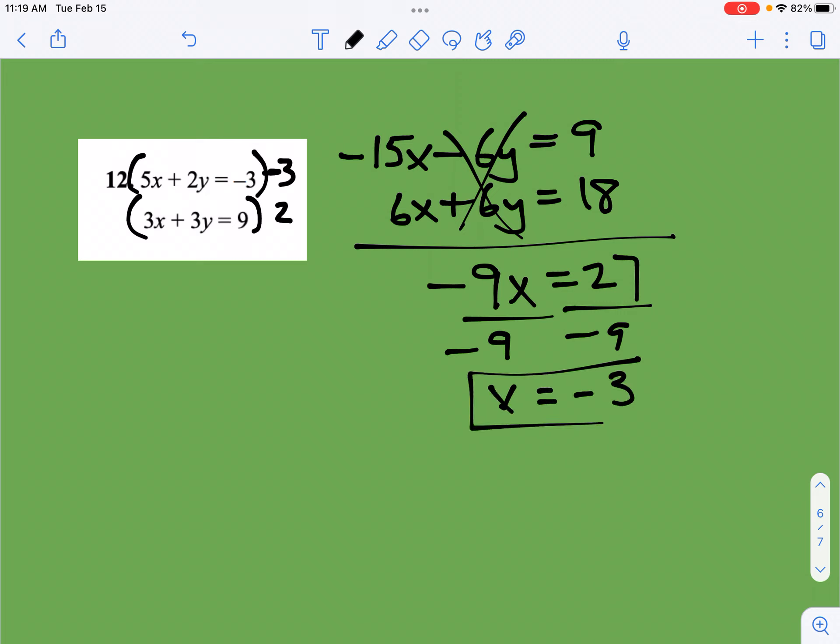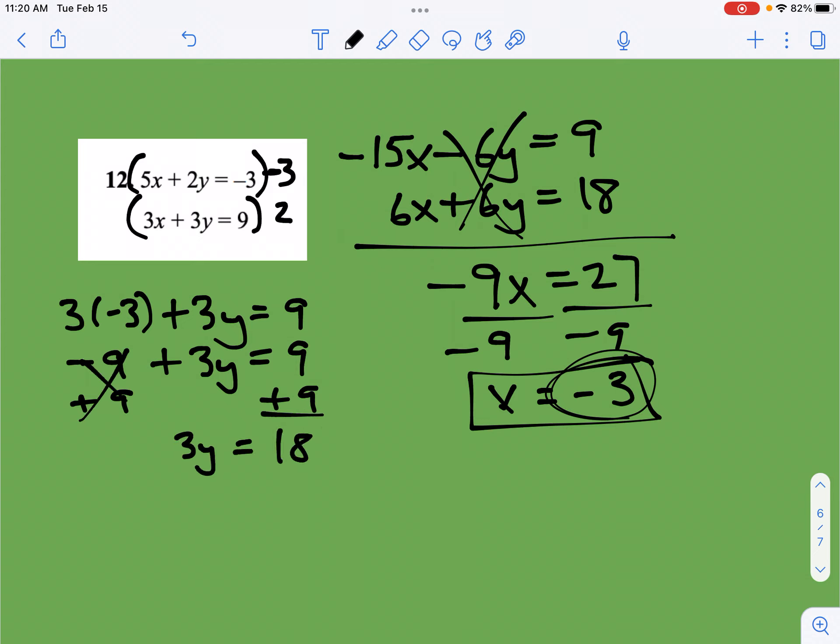All right. So let's take this now and let's put it in the bottom one. So 3 times negative 3 plus 3y equals 9. You get negative 9 plus 3y equals 9. We're going to move our 9 over to the other side to get the 3y by itself by adding it. You get 3y is equal to 18, and then divide both sides by 3. And you should get y is equal to 6.